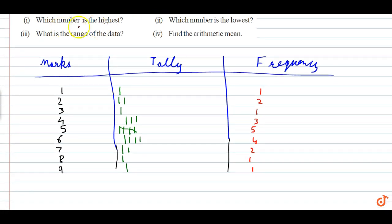Which number is the highest? The answer is nine. Which number is the lowest? One.